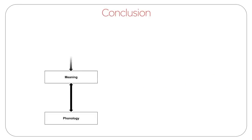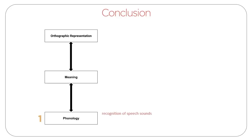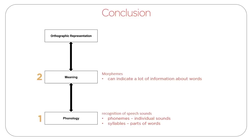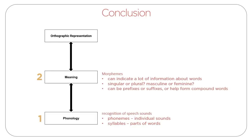To summarize, the central features of learning to read and write words are as follows. The first is phonology, which involves recognition of speech sounds at different levels such as phonemes and syllables. The second is the recognition of meaningful units of words — words are made up of morphemes, which can indicate whether words are singular or plural, masculine or feminine, and can also be prefixes, suffixes, or help form compound words.